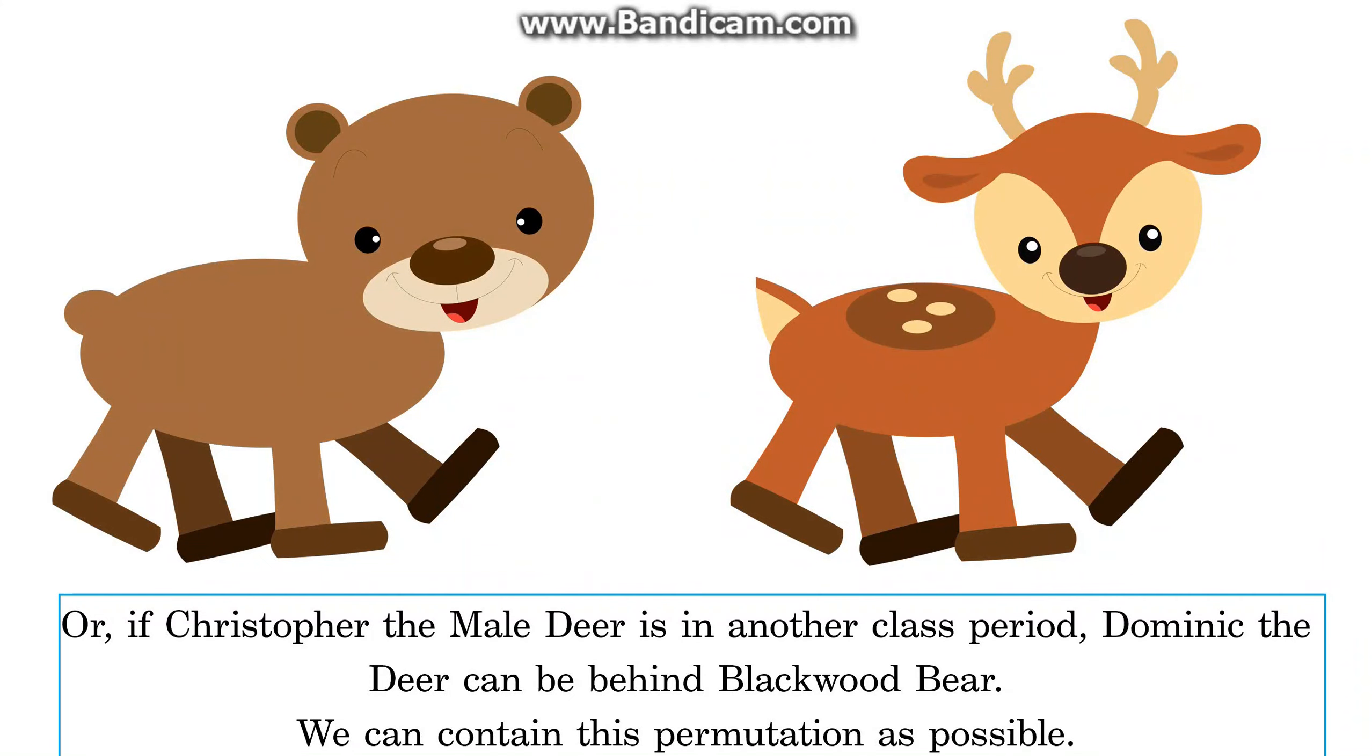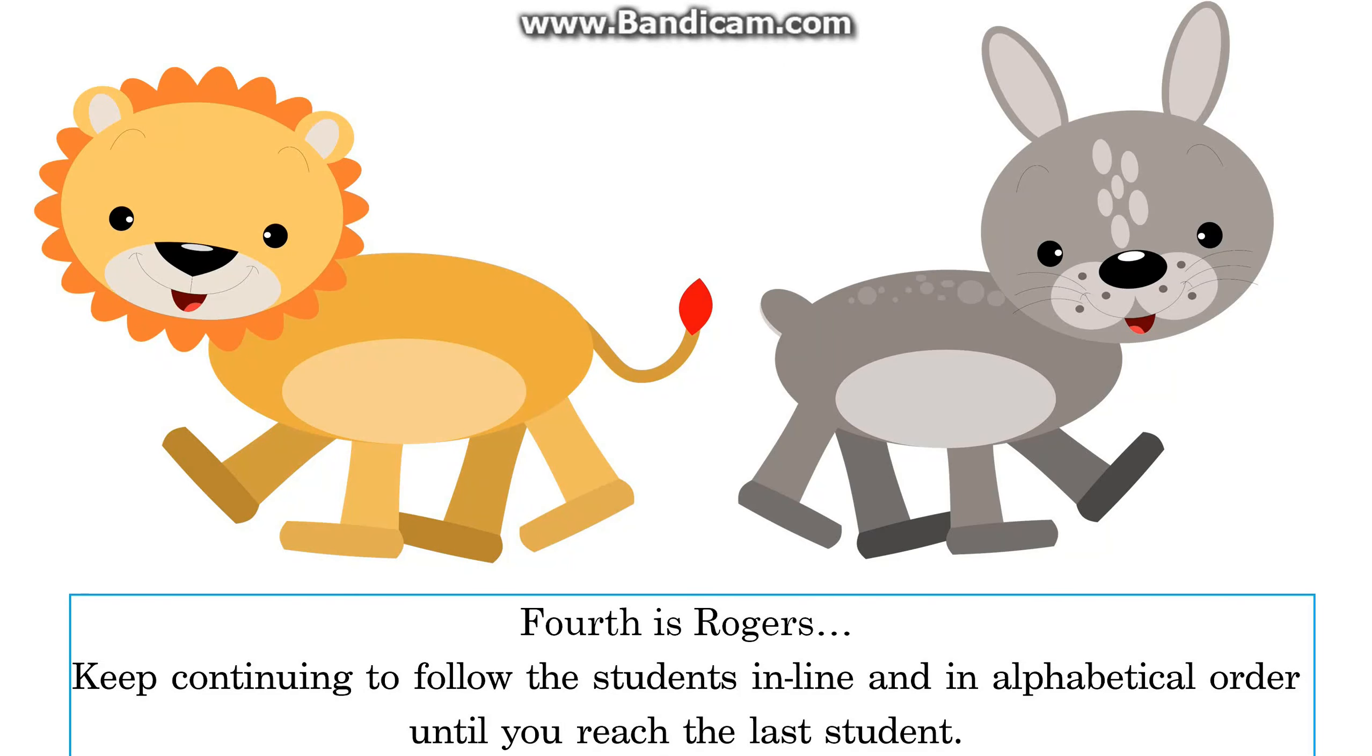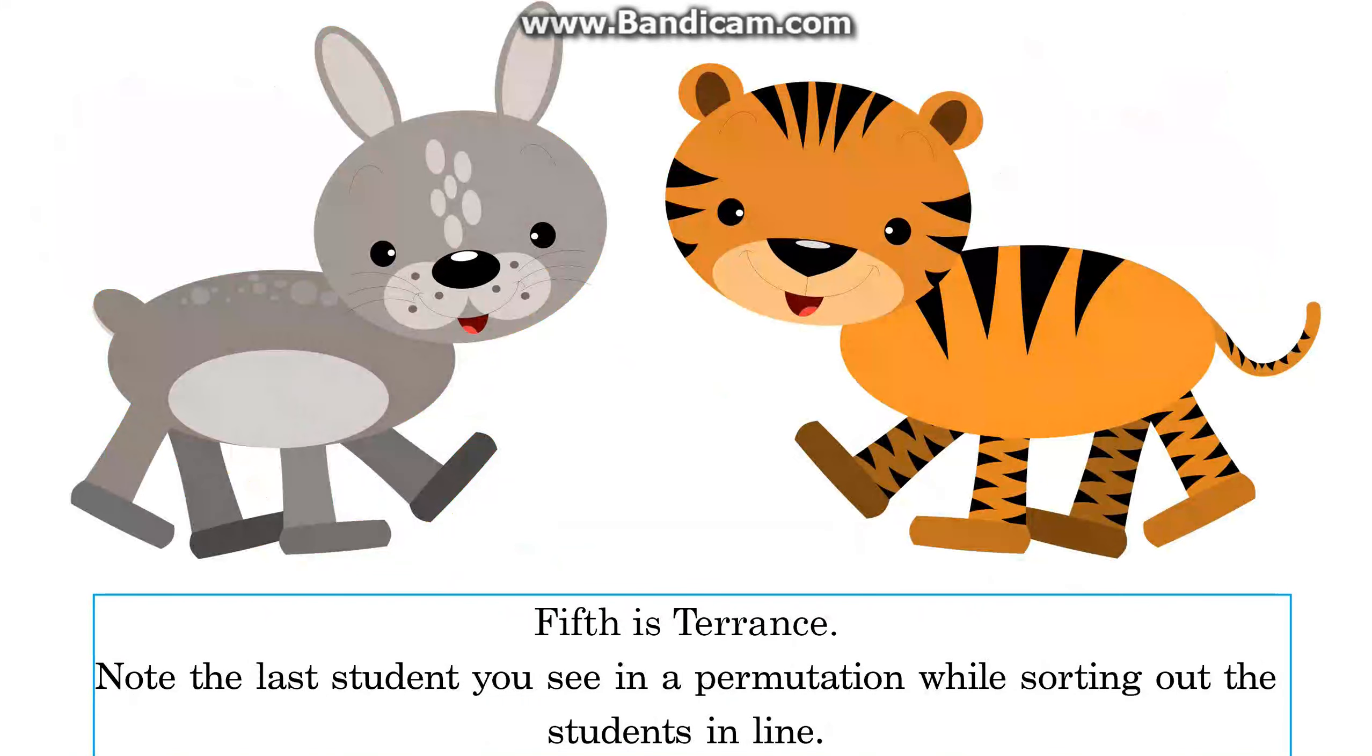We can contain this permutation as possible. If necessary, continue sorting in alphabetical order and remember it clearly. First is Blackwood, second is Dominic, third is Leonard, fourth is Rogers. Keep continuing to follow the students in line and in alphabetical order until you reach the last student. Fifth is Terrence.